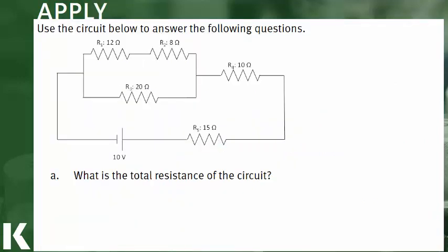So this problem gives us a circuit diagram and asks us a few questions. The first question we have to address is, what is the total resistance of this circuit? Now, we see we have five resistors, and this is a little bit more complex of a diagram. But we first want to start by identifying what resistors are in series and what resistors are in parallel.